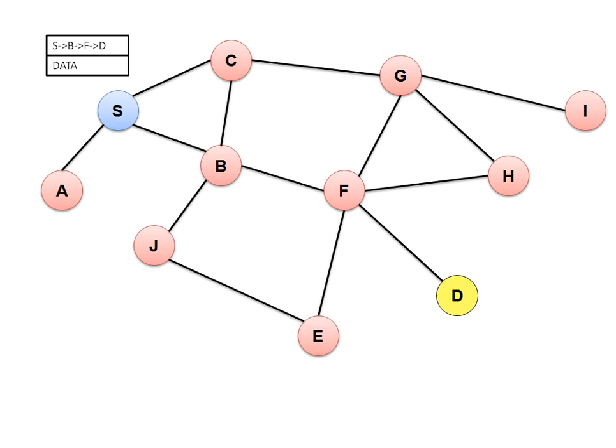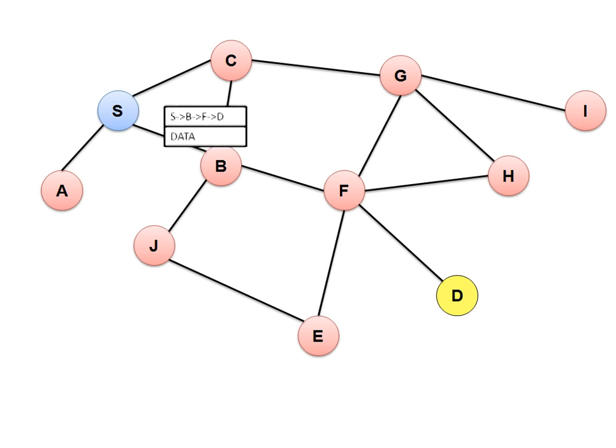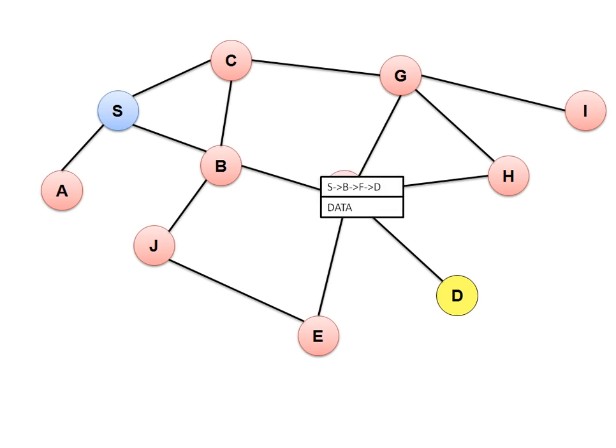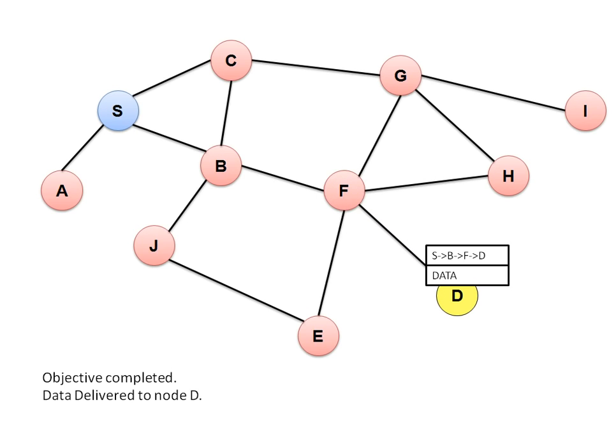The route is included in the data header before sending, meaning the route is fixed before transmission — that's why this is also known as source routing. The data packet follows the fixed route: S to B, B to F, and F to D. Objective completed — data delivered to node D.